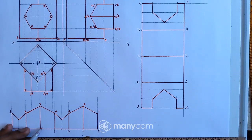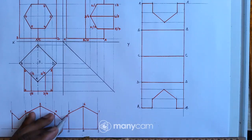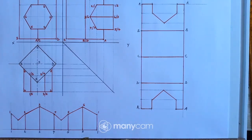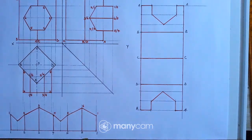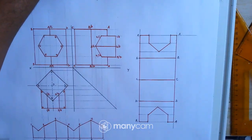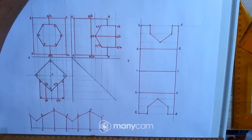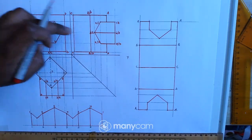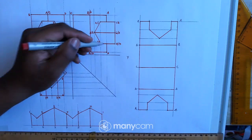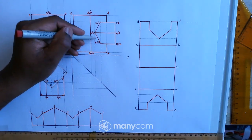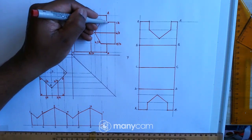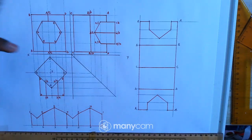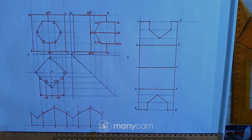These are the fold lines. This is the complete drawing for this question — as you can see, I have the top view, front view, and left view with the interpenetration curve, and the developments for both prisms.